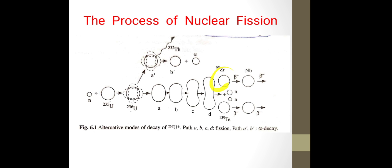In this case we get zirconium 95 and tellurium 139. These are the fission fragments each having a spherical shape.